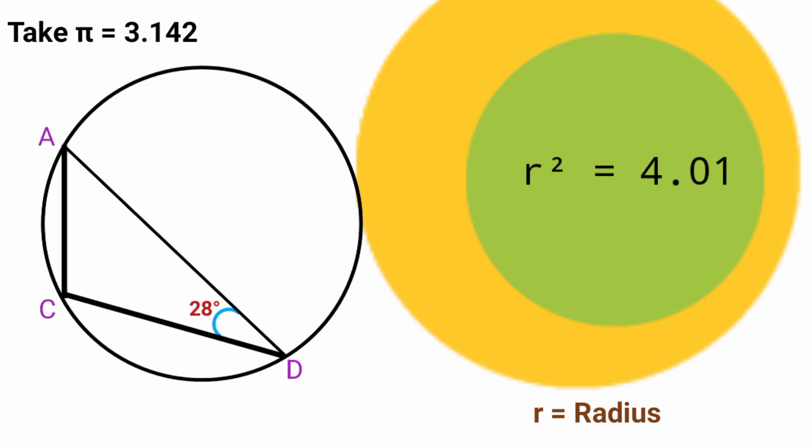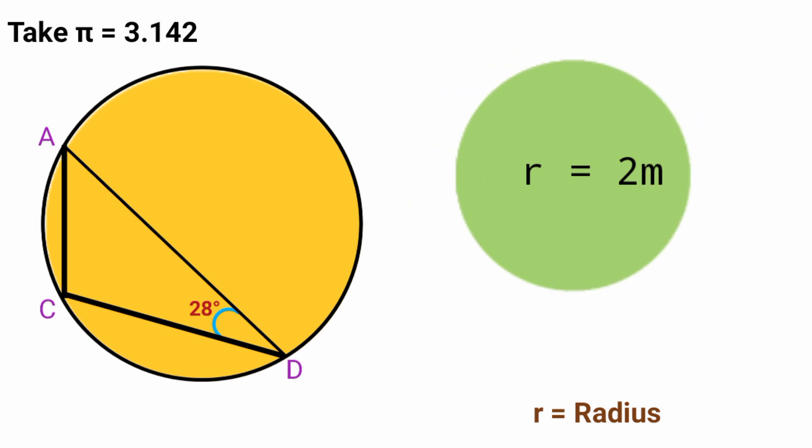Now to find the exact value of r we find the square root of both sides. So we're going to have square root of r² equal to square root of 4.01. Here square will cancel square root. So we are left with r equal to square root of 4.01. The square root of 4.01 is 2.0024 which approximately equals to 2. So now the radius of this circle here is found to be 2 meters.